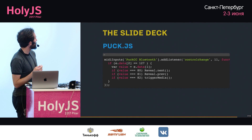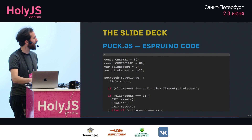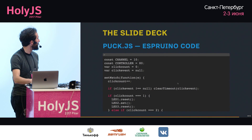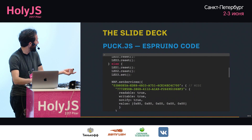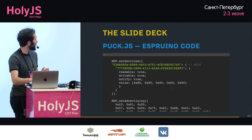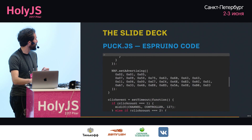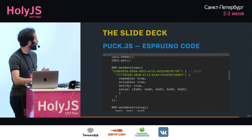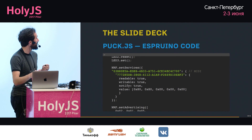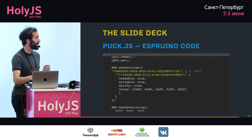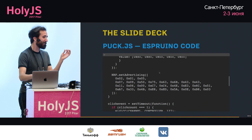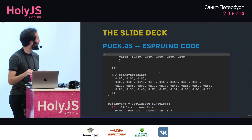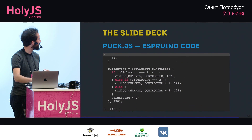The Puck was more interesting — this is the actual code I had to put on the Espruino to differentiate between a single click, a double click, and a triple click to trigger media. We also have to advertise to the computer that we are a MIDI Bluetooth capable device — I found that on the internet and copied it. I thought this would be the easy part, but it turned out to be the part I spent the most time on.